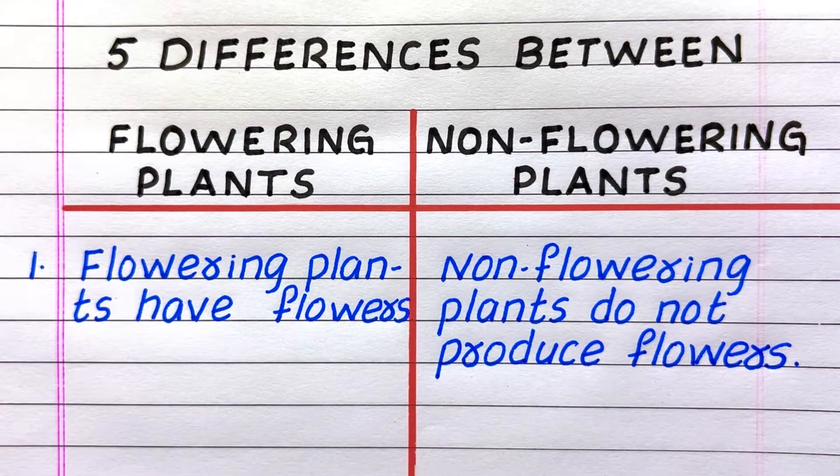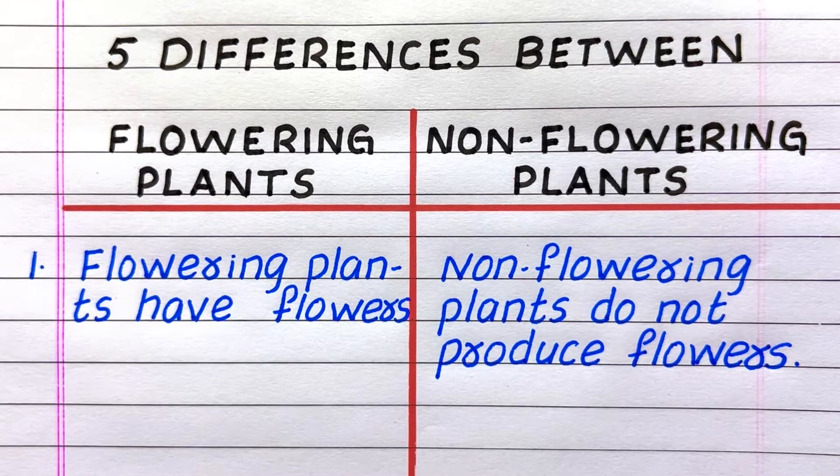Flowering plants have flowers, while non-flowering plants do not produce flowers.